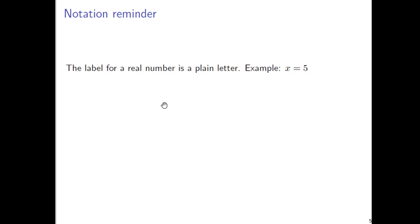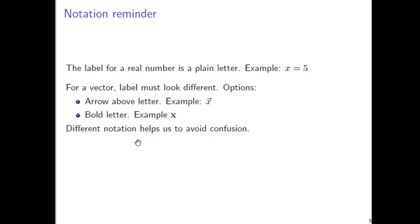Just one thing in terms of notation to try to form some good habits. Please note that the label for a real number should be a plain letter, like this x. Whereas for a vector, the label should look different, like an x with an arrow above it, or a bold x is what the book would prefer. The notation is going to help us avoid confusion. We should keep track of a vector being different from a scalar, and by scalar I mean just a plain old number like five. This notation convention is actually also going to apply in the thing that we're now about to introduce, a thing that happens to be called a vector function.